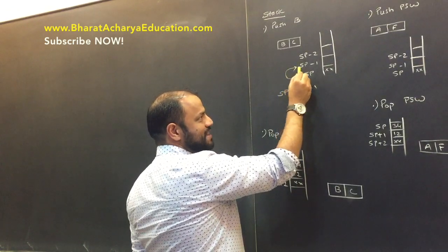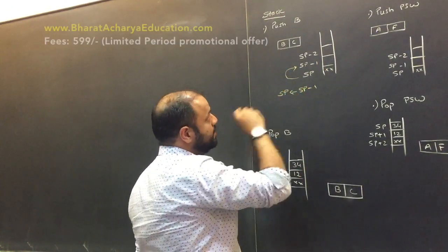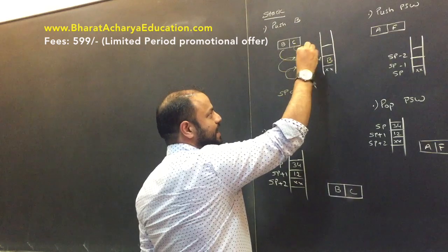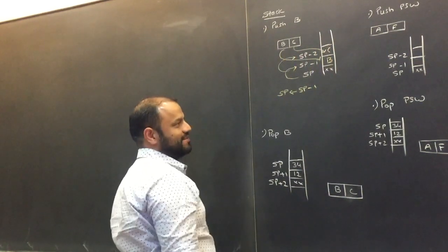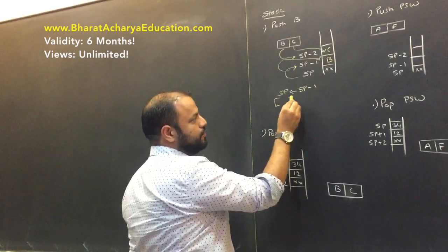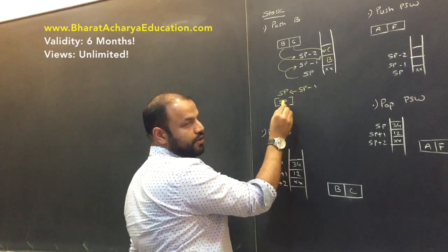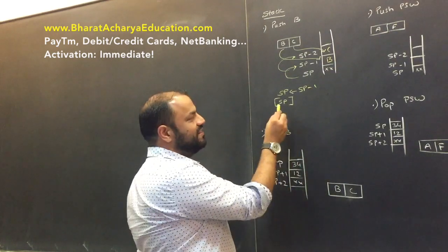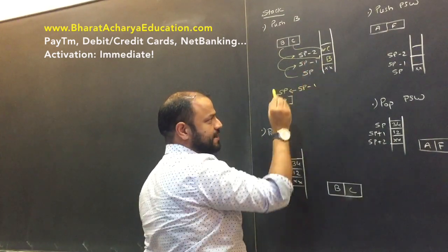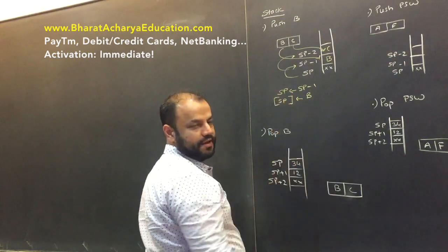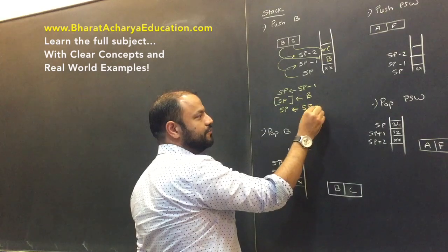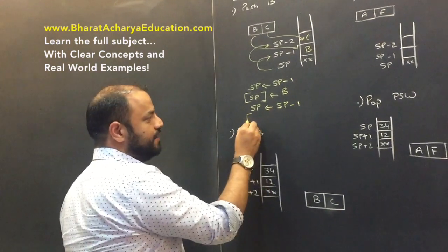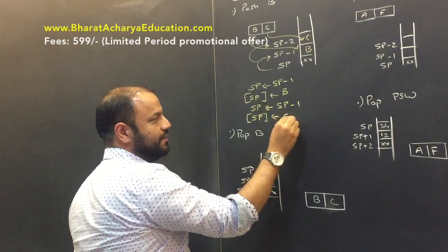The first thing that happens is SP becomes SP-1, now pointing to a blank location. There you put the data of B register. Then again SP becomes SP-1 — effectively SP-2 from the original — and there you put the data of C register. To write it as steps: SP becomes SP-1; at the new location pointed by SP, store B. Then SP becomes SP-1 again; at that new location, store C.